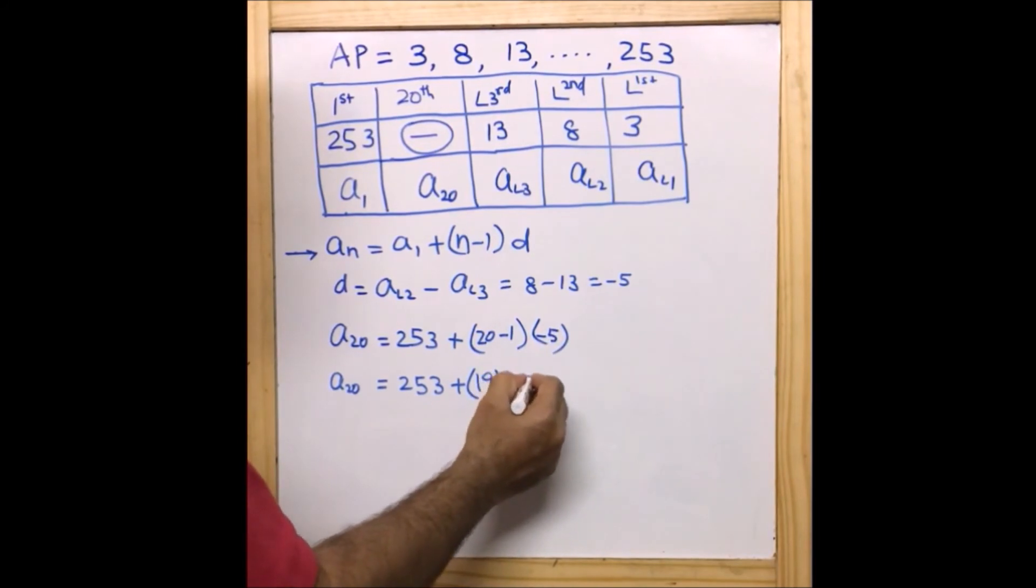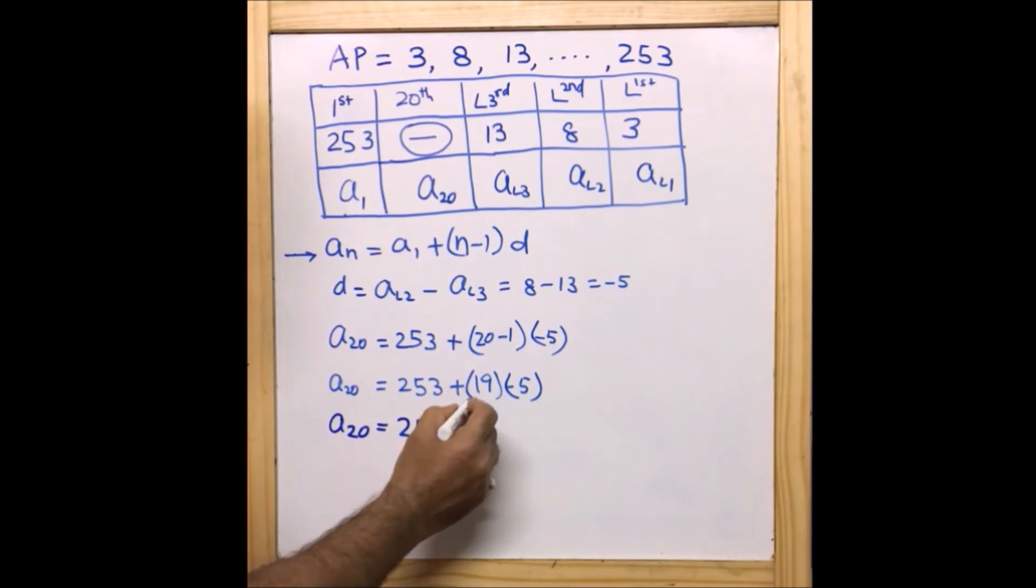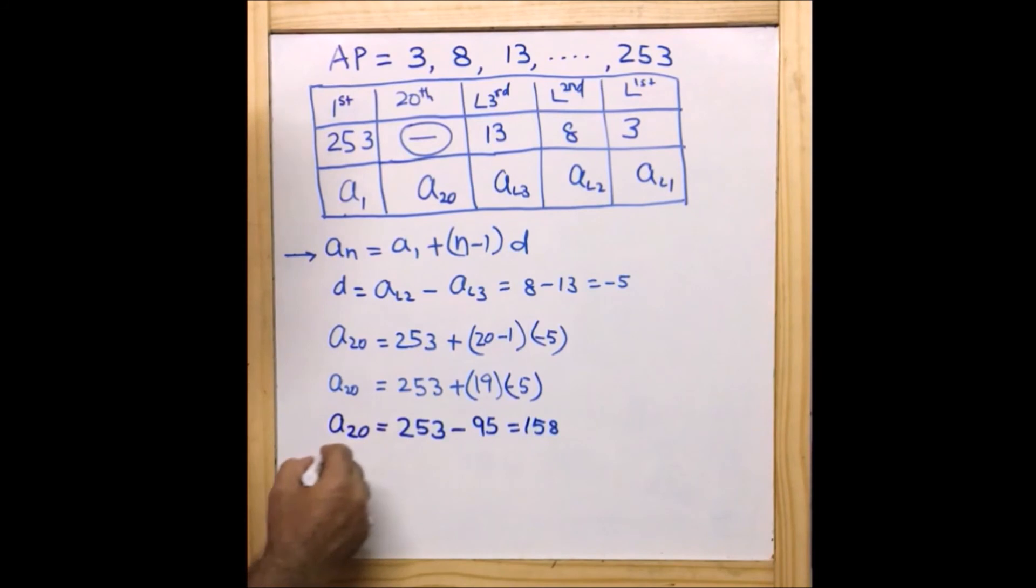So the value of a_20 = 253 + 19 × (-5). 19 × 5 is 95, and that is equal to 158.